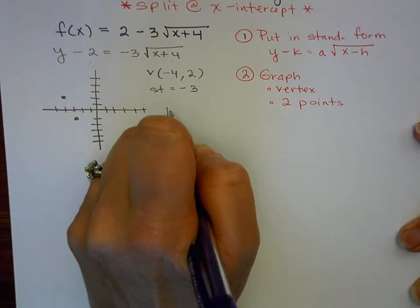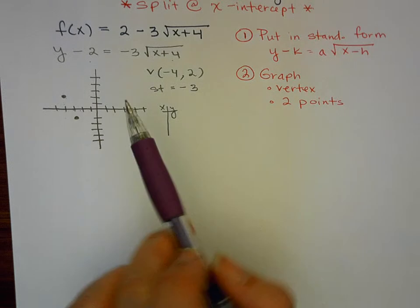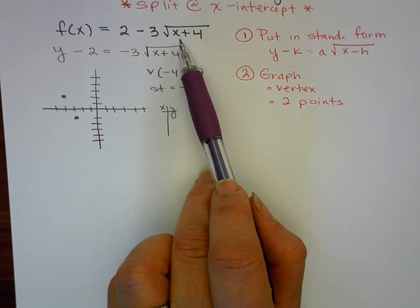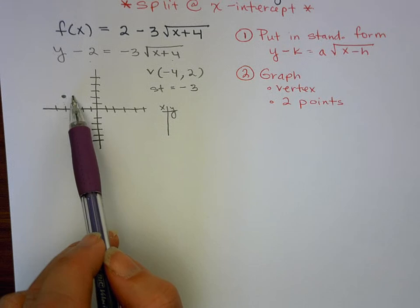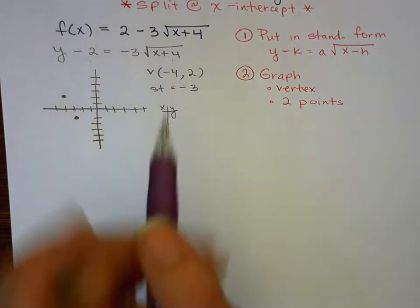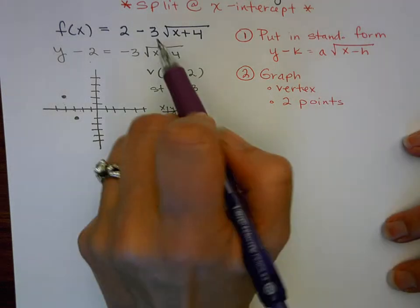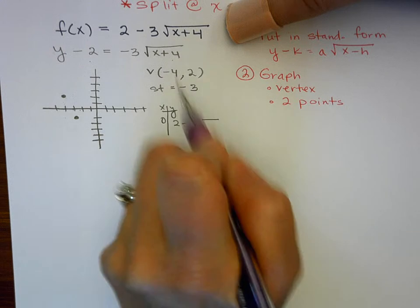Now I need one more point, so I need to pick an x value. When I pick an x value, I need to make sure I know the square root of whatever number I'm picking. I need to figure out what number I can put in here so that when I add 4 to it, I know the square root of that number. I could count from the vertex over 4, which suggests using x equals 0. If I use 5, for example, 5 plus 4 is 9 and I know the square root of that. So we're going to use 0. I go back to the original equation and replace x with 0: 2 minus 3 times the square root of 0 plus 4, which is just 4.